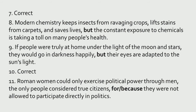Number 7 is correct. Number 8: 'Modern chemistry keeps insects from ravaging crops, lifts stains from carpets, and saves lives but the constant exposure to chemicals is taking a toll on many people's health' — 'and' changed to 'but.' Number 9: 'If people were truly at home under the light of the moon and stars, they would live happily in darkness but their eyes are adapted to the sun's light.' Number 10 is correct. Number 11: 'Roman women could only exercise political power through men, the only people considered true citizens, for they were not allowed to participate directly in politics' — 'when' changed to 'for' or 'because.'